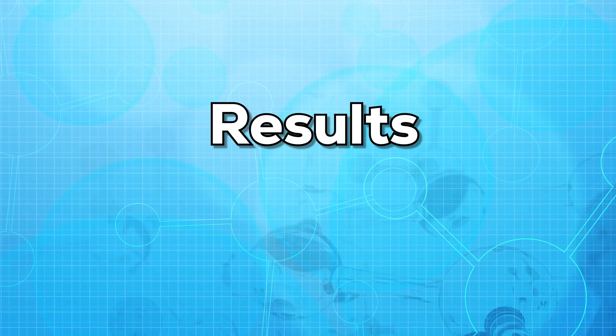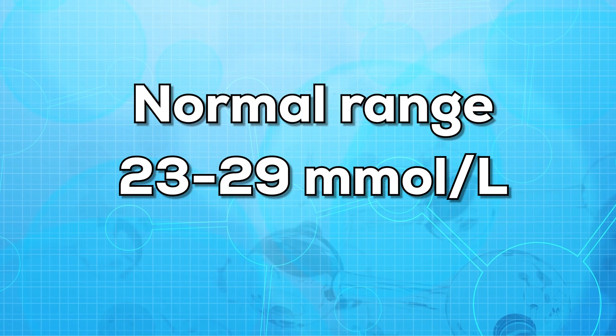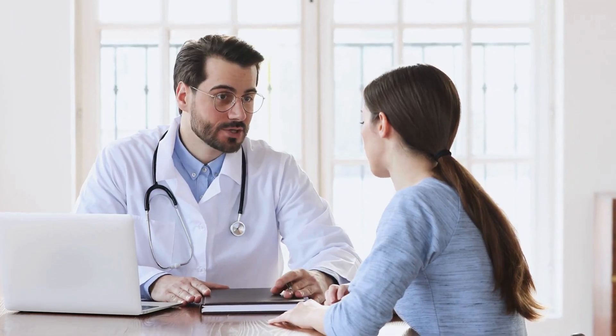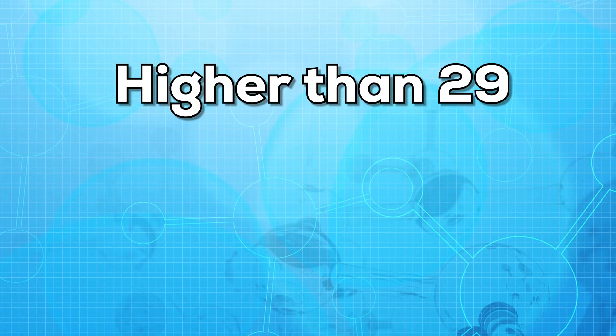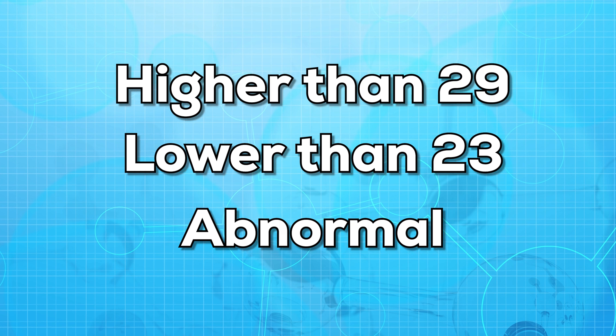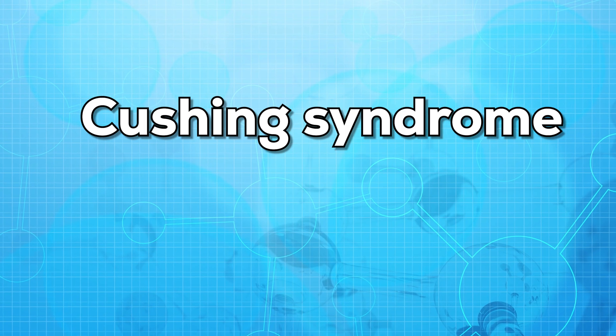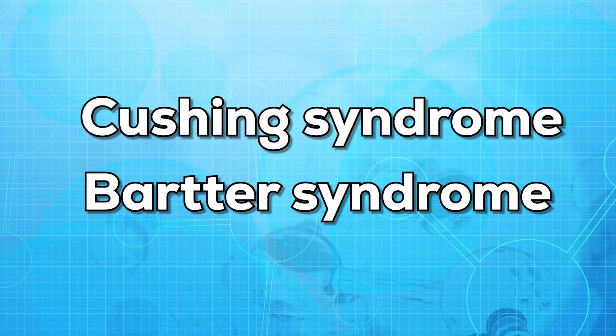The normal range for this test is 23 to 29 milliequivalents per liter. These ranges may vary from lab to lab, so it is highly advisable to talk to your doctor after receiving your reports. Any value higher than 29 or lower than 23 may be considered abnormal.